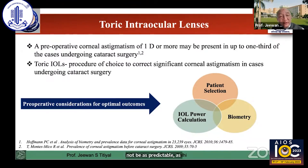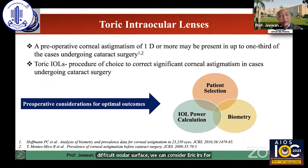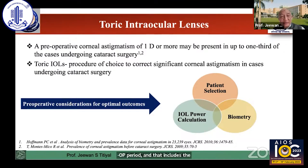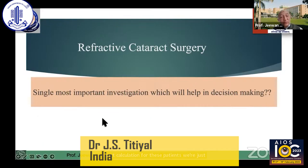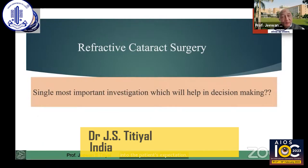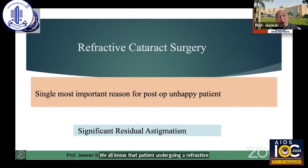Therefore, it is very important to consider in those patients where the patient is not actually having a difficult ocular surface, we can consider Toric IOLs for correction of corneal astigmatism. The proper patient selection is most important for us to give good results in the post-op period, and that includes the biometry part, as well as the good IOL calculation for these patients. Looking into the patient's expectation, the single most important investigation in such cases for making a decision will be biometry, that is the keratometric power and the axial length for these patients. We all know that patients undergoing a refractive procedure, especially refractive cataract surgery, one of the most significant problems which post-op patients face is residual astigmatism.